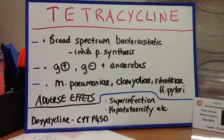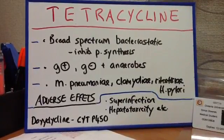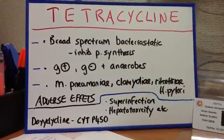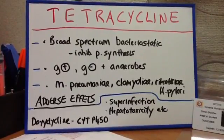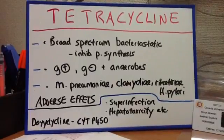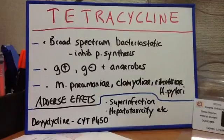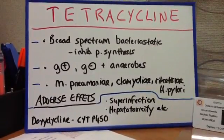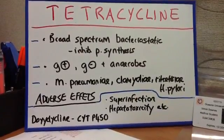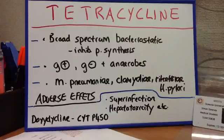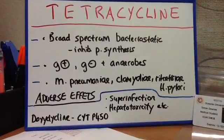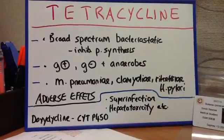It really has a broad spectrum, and some of the adverse effects you should think about are super-infection, where you'd have an overgrowth of bacteria, and hepatotoxicity, nephrotoxicity, venous thrombosis, photosensitivity, vestibular symptoms, and calcium chelation. For doxycycline, although there's no renal adjustment required, if you're taking anti-seizure meds, barbiturates, or alcohol, it's going to decrease the half-life of doxycycline because the cytochrome P450 in the liver is going to be working overtime.